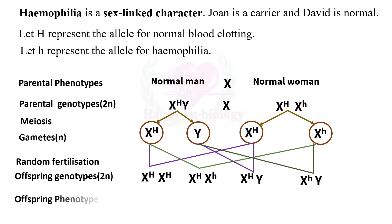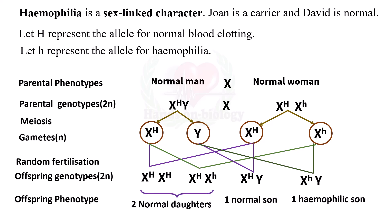Others are all normal. Offspring phenotypes: all daughters normal, one normal son and one hemophilic son.